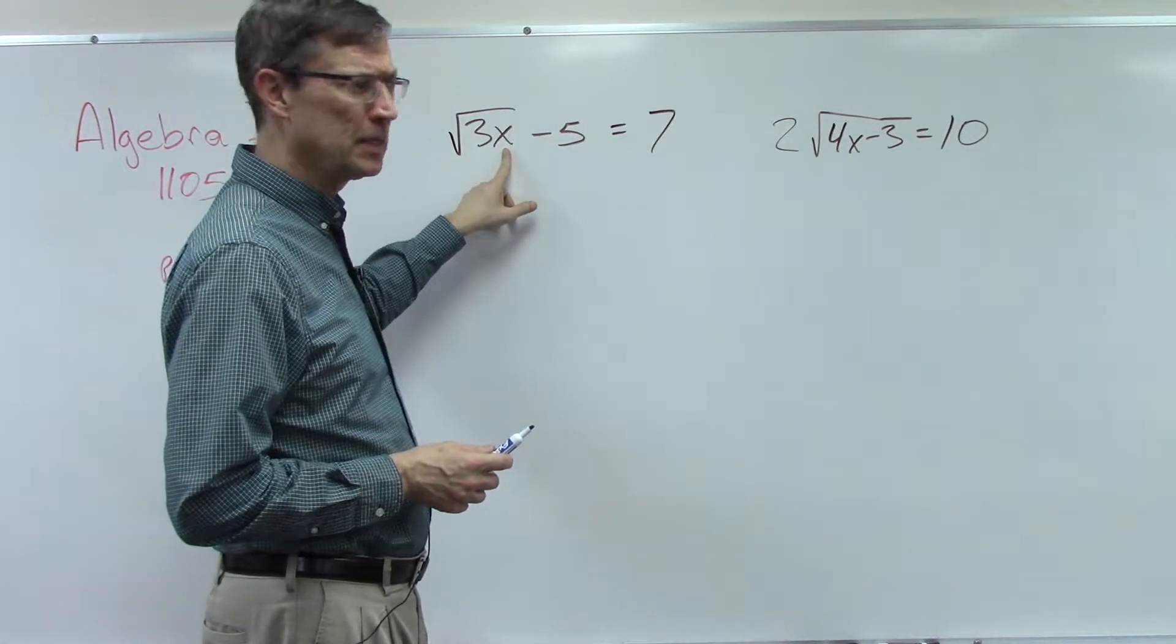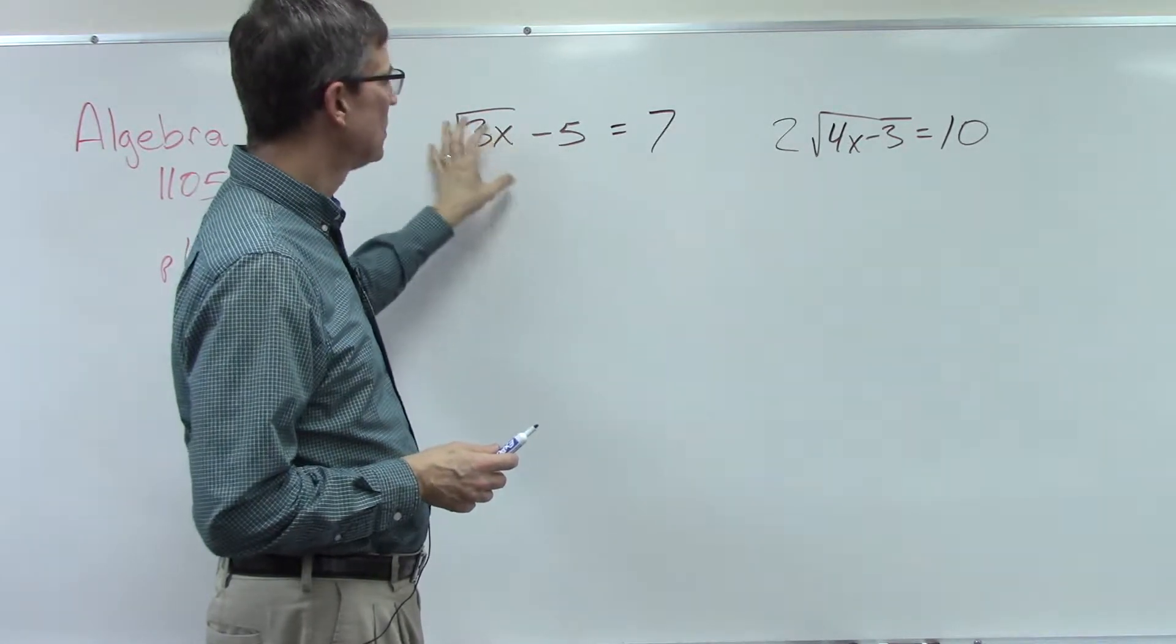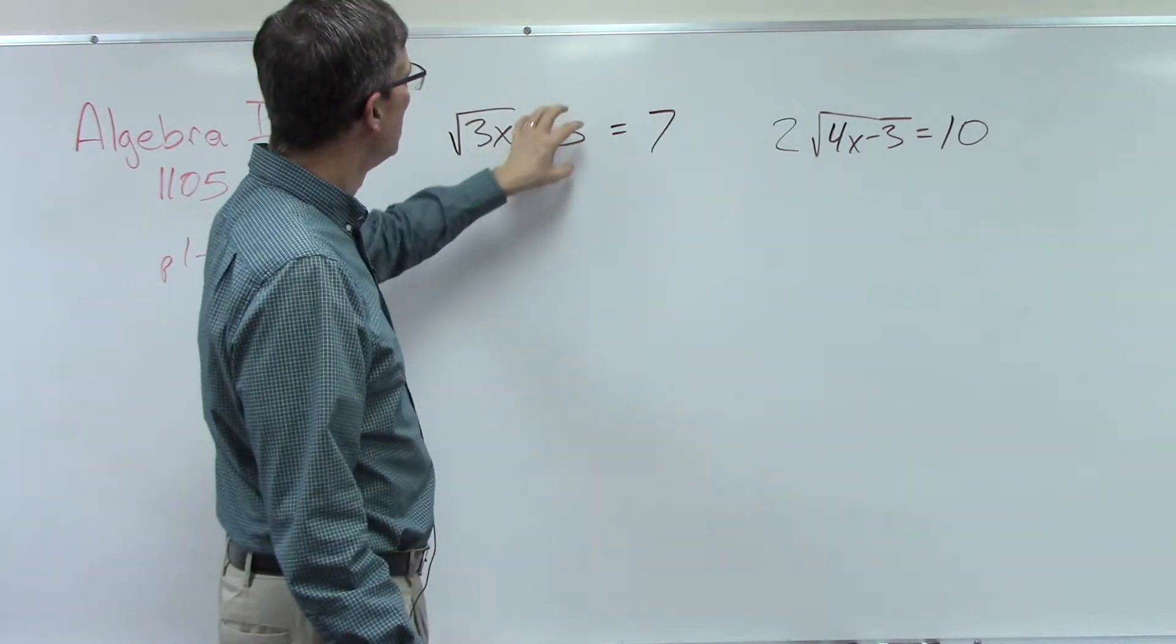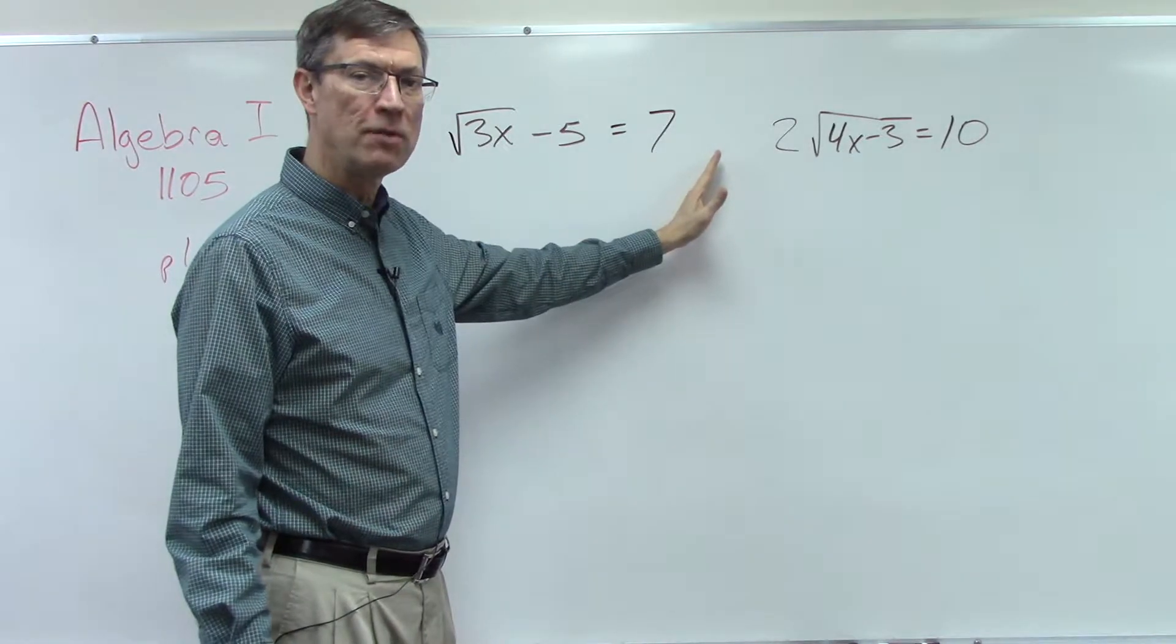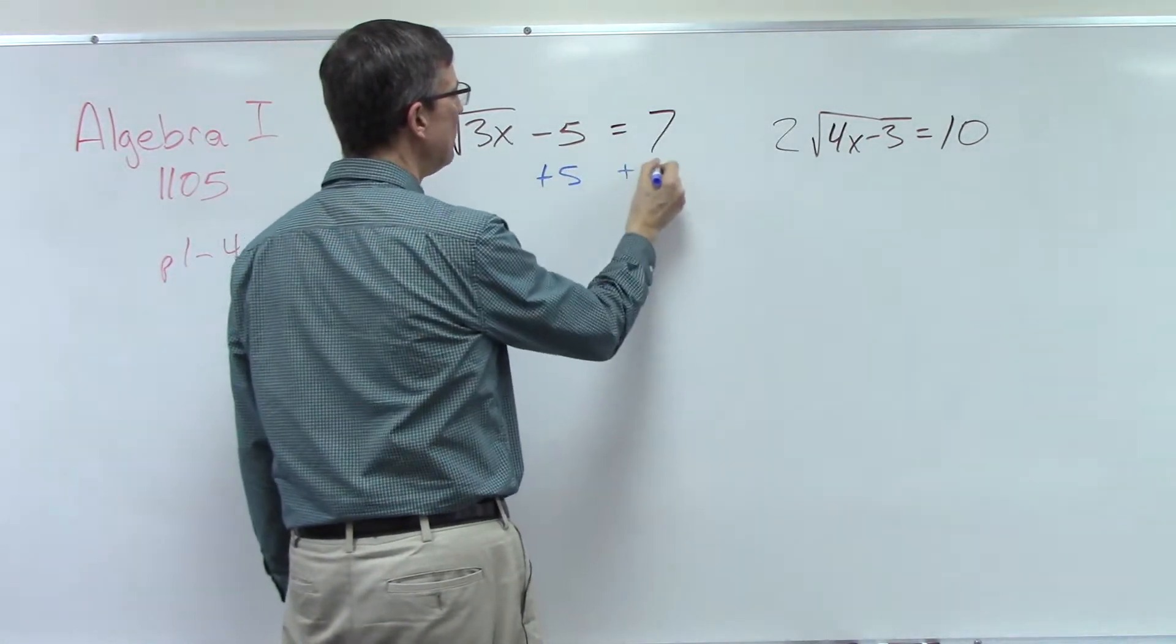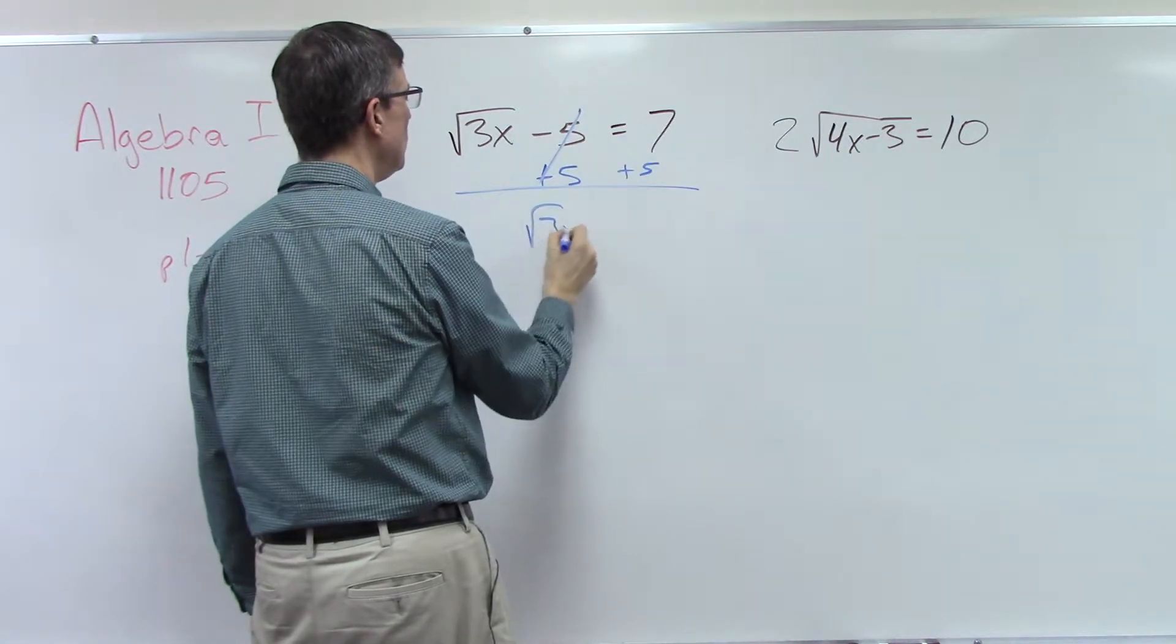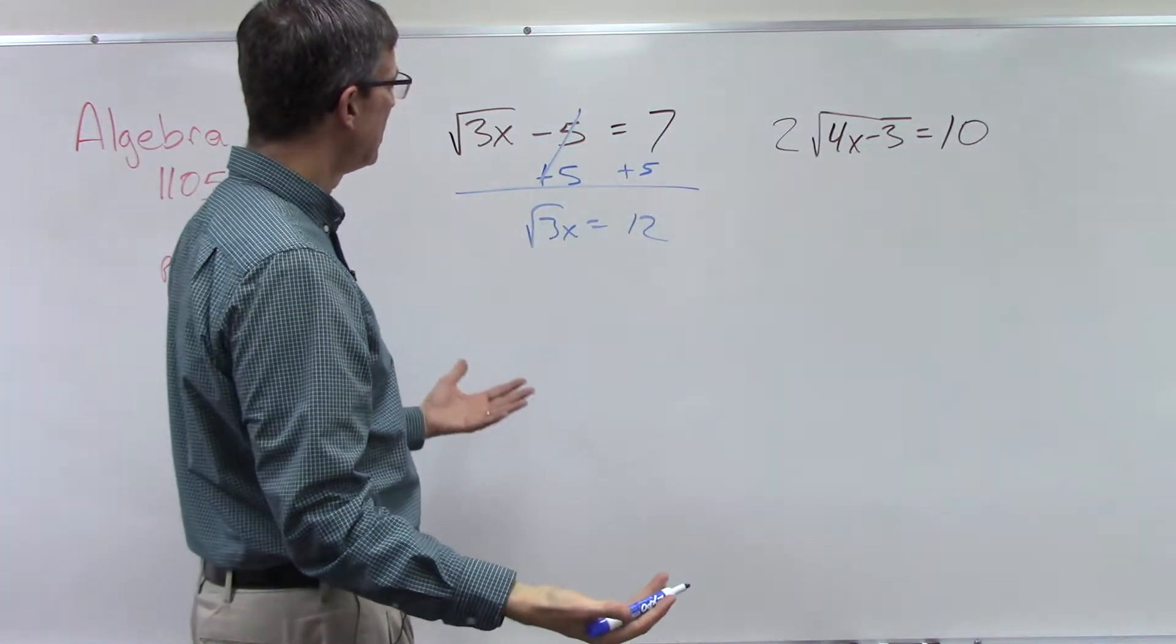We need to first of all, just like if this were a pre-algebra problem, we want to get rid of this plus 5 and bring that over to the other side first. That kind of isolates this radical. So that part's easy. We add 5 to both sides and so then that cancels and I have square root of 3x equals 12. Okay, everybody with me? That part's not too bad.